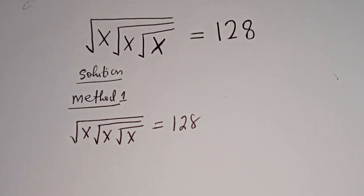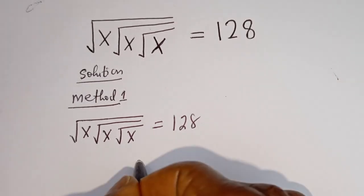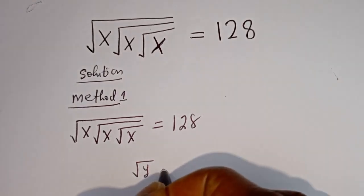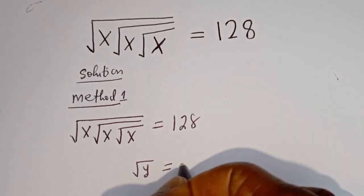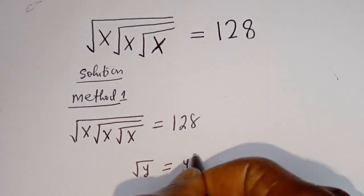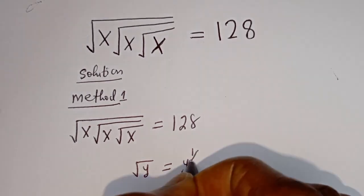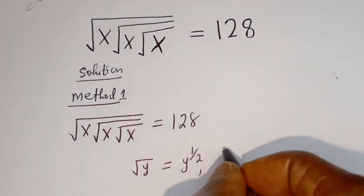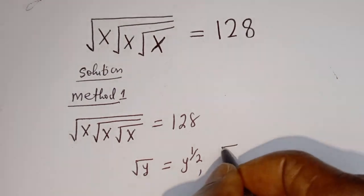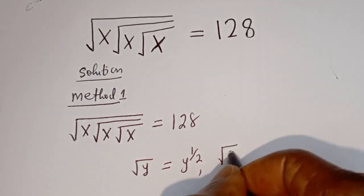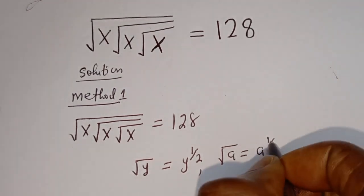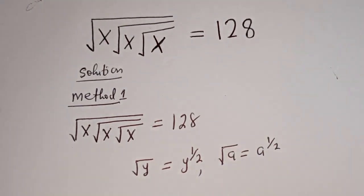Take note of this: if you have square root of y, this is equal to y to the power of 1 over 2. And if you have square root of a, this is equal to a to the power of 1 over 2.